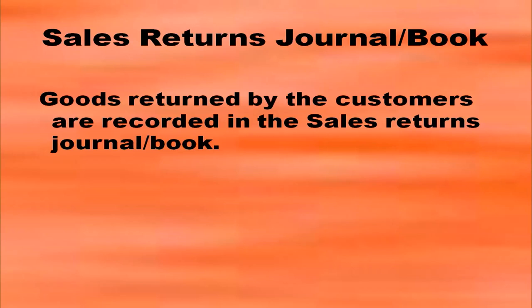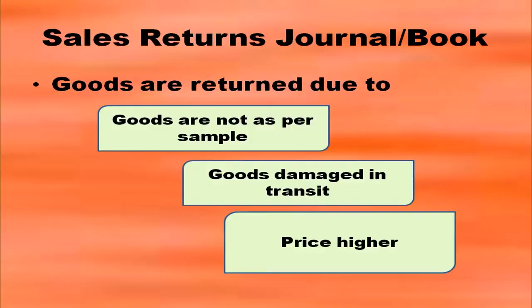We have also to go through the sales returns book or sales returns journal. Goods returned by customers are recorded in the sales returns journal. Goods may not be up to the quality the customer decided. Goods may be returned because they are not as per sample, or may be damaged in transit, or the seller has charged a high price.